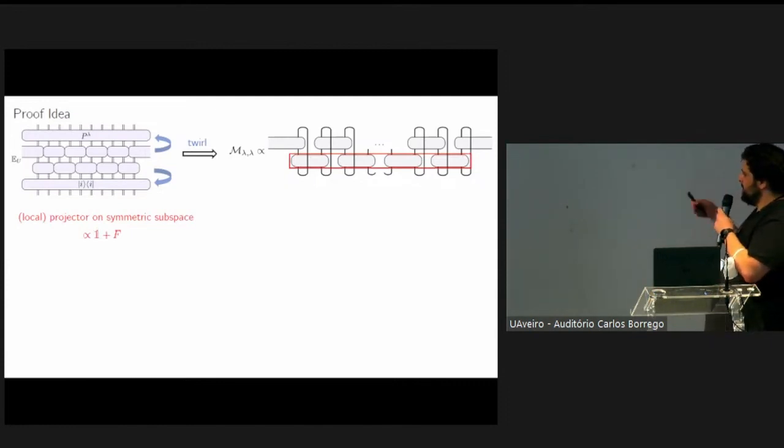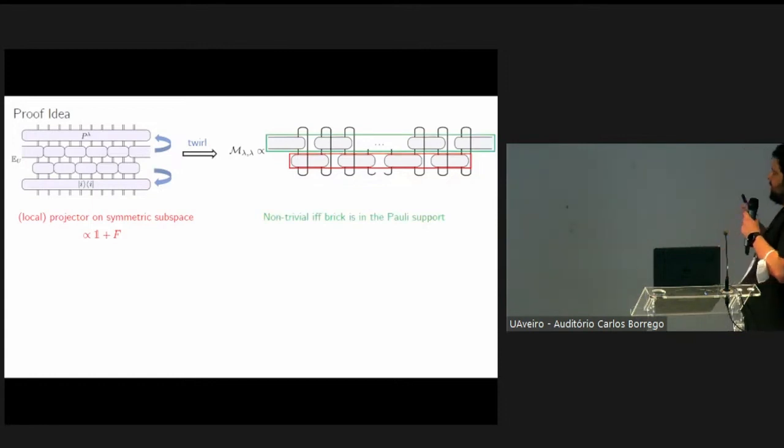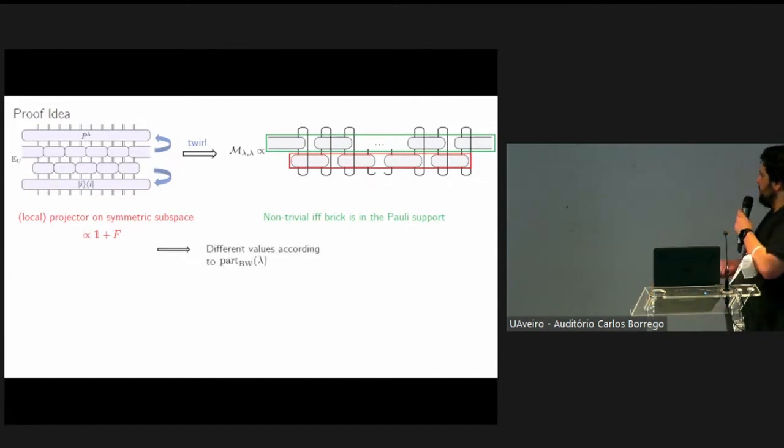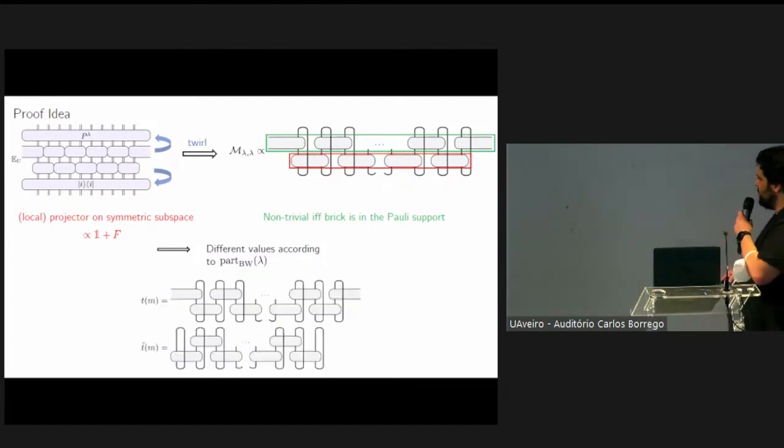We know exactly what each brick is. In particular, the first layer of this tensor network is made up of projectors onto the symmetric subspace, while the second layer is made up of operators that are non-trivial whenever the corresponding brick in the original circuit was in the support of the Pauli string we are considering. This second fact implies that we obtain different values of the measurement channel according to the partition of the circuit. Lastly, what we can show is that the proof reduces to the simplification of these two traces, which can be done recursively. This recursion can be written in terms of systems of recurrence relations, and then we can find analytic solutions for them.